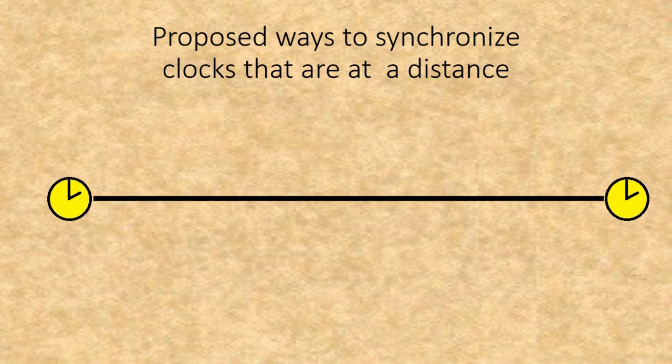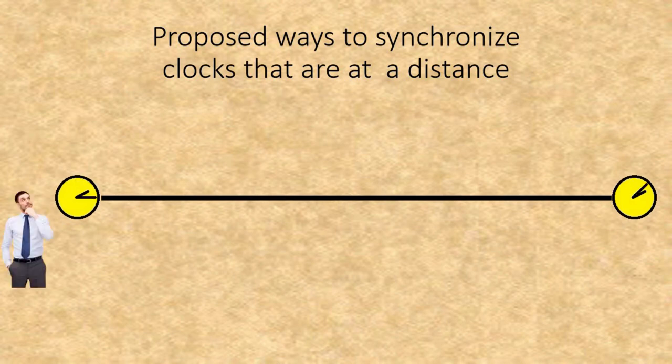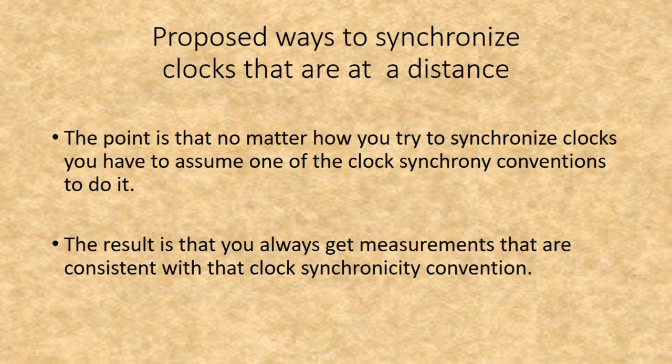It has also been suggested to use a rod to synchronize two clocks at a distance. However, no rod is perfectly rigid — even a diamond rod would be sufficiently flexible to mess up a synchronization for measuring the one-way speed of light. Furthermore, an observer at one clock would still see the other clock as unsynchronized. And if one observer did see both clocks as synchronized, they would measure the incoming speed of light as infinite and the outgoing speed as one-half c. The point is that no matter how you try to synchronize clocks, you have to assume one of the clock synchrony conventions, and you always get measurements consistent with that convention.